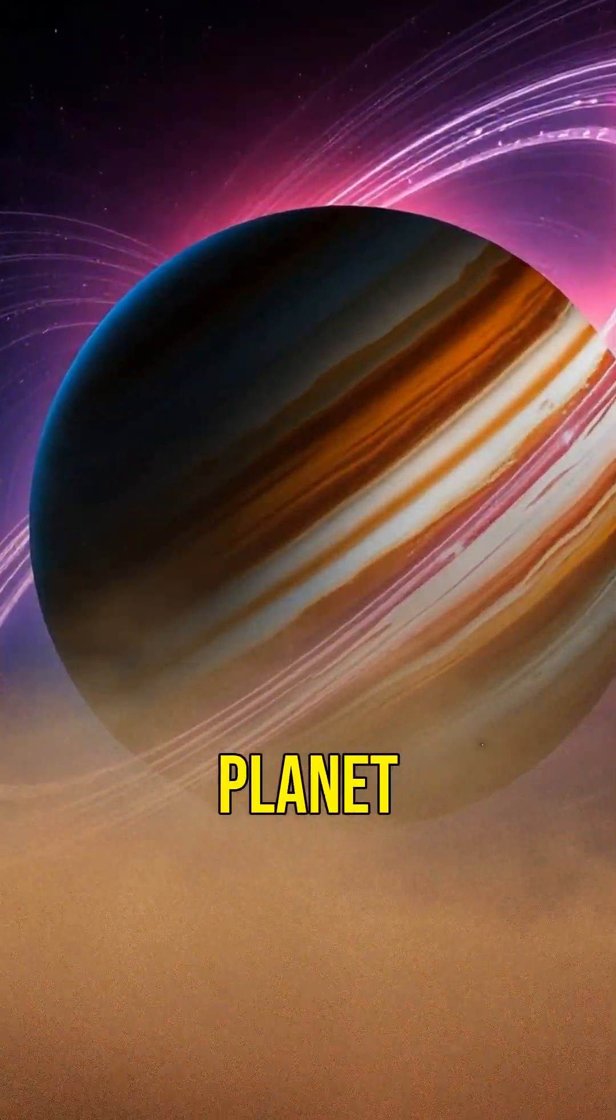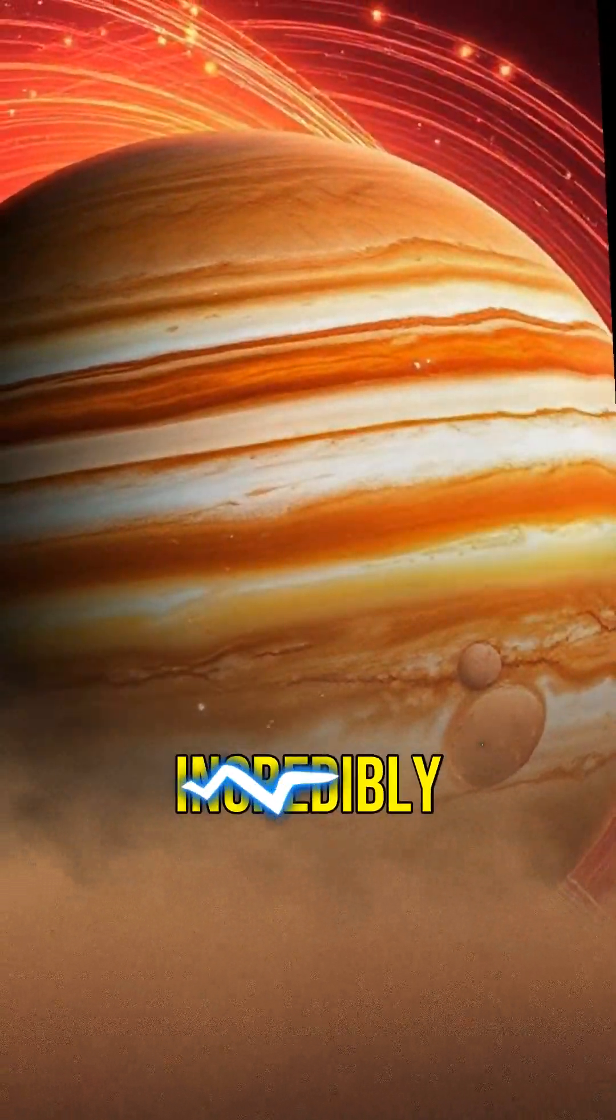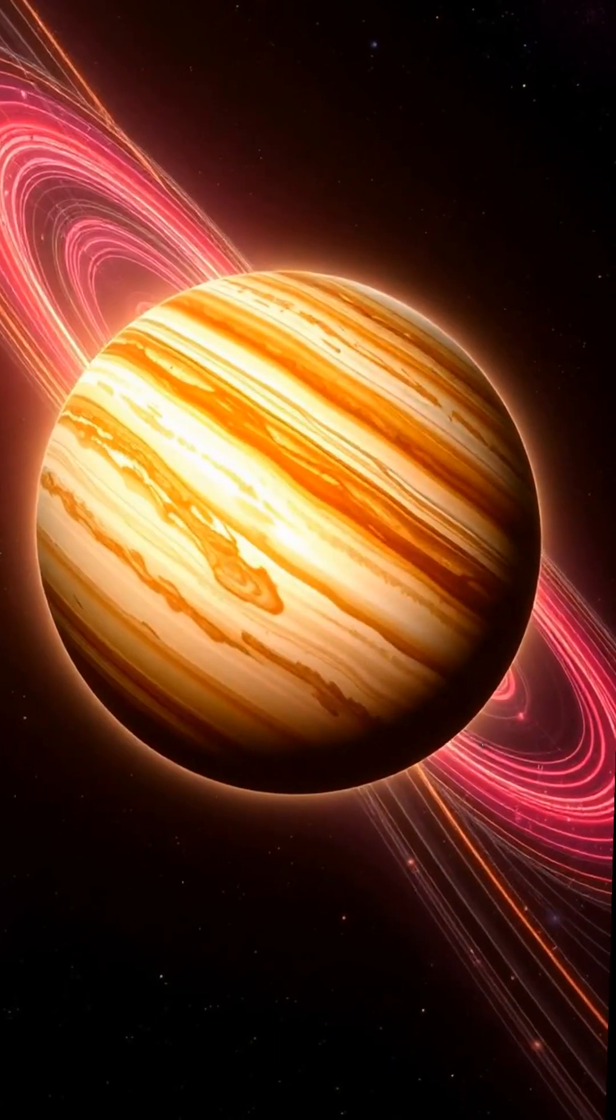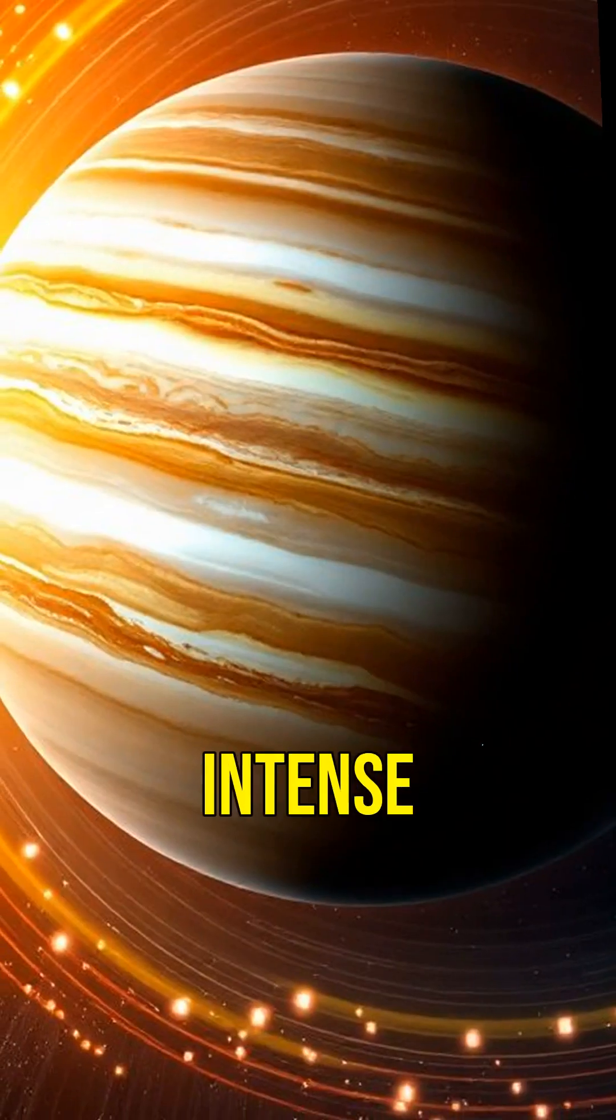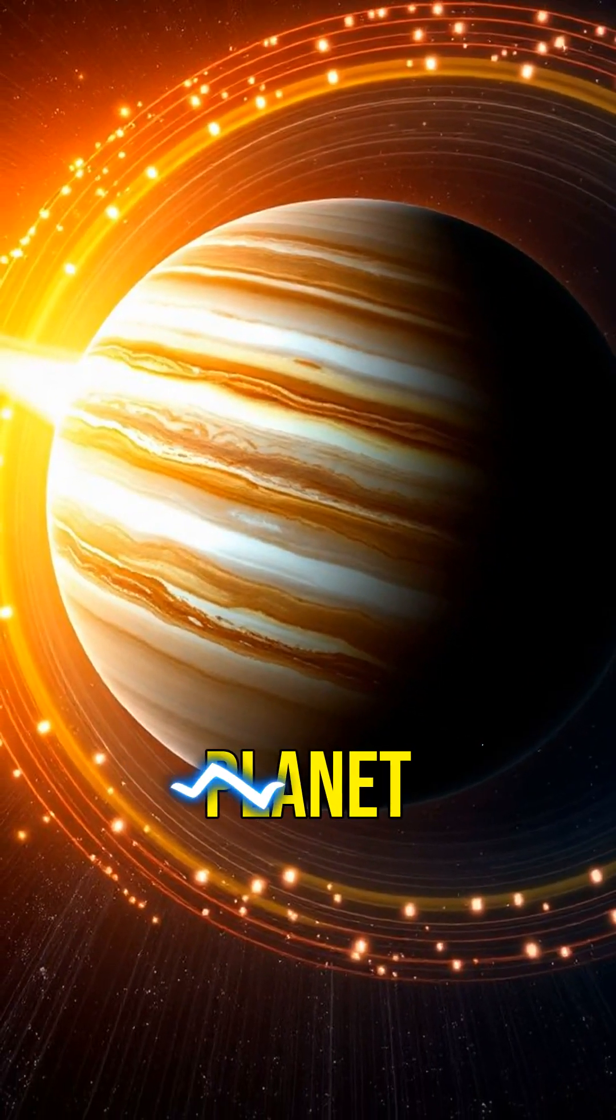Jupiter, the largest planet in our solar system, has an incredibly strong magnetic field. This field traps charged particles, creating intense radiation belts around the planet.